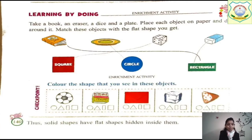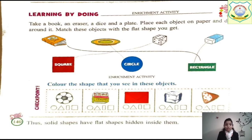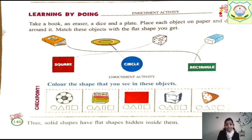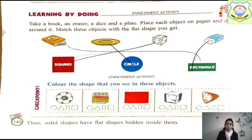Learning by doing: take a book and eraser, a dice and a plate. Place each object on paper and draw around it. Match these objects with the flat shape you get. If we draw around a book, we will get a rectangle shape — that is already done for you. Now, a plate — what shape is a plate? Circle. A dice will give a square-like structure. Then your eraser will look like a rectangle. So match it properly.